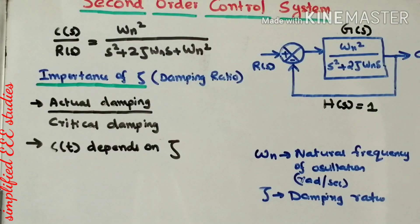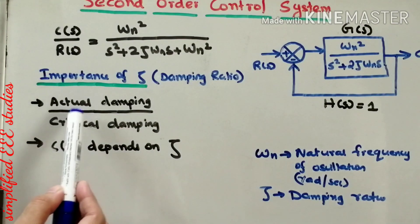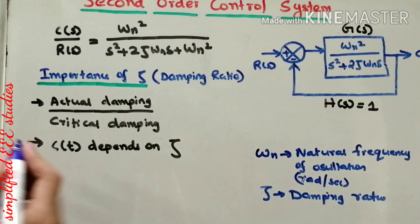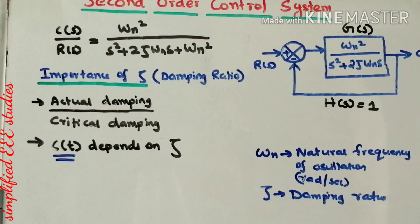Zeta, the damping ratio, is the ratio of actual damping to critical damping. It is a unitless quantity. The time response depends directly on the value of zeta. Based on the value of zeta, you can classify second-order systems as undamped, underdamped, overdamped, and critically damped.